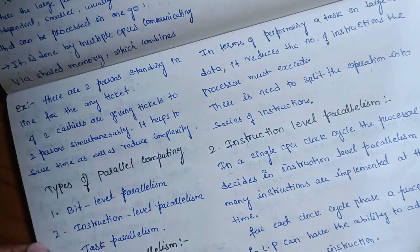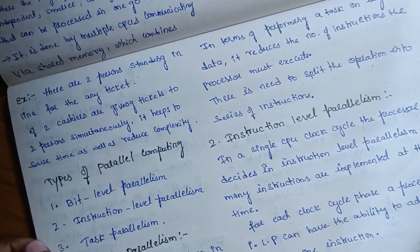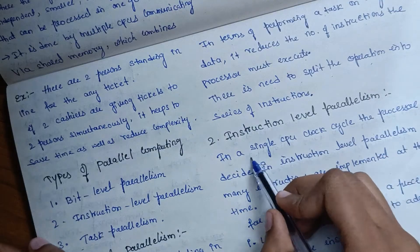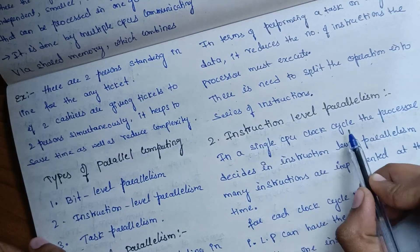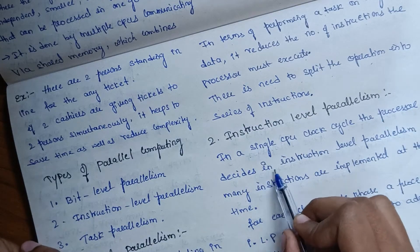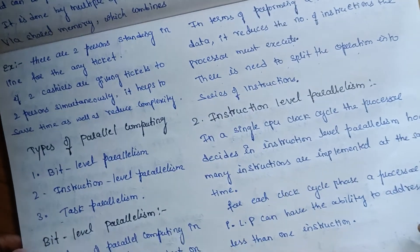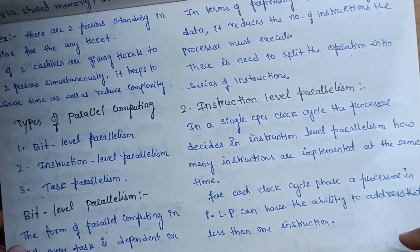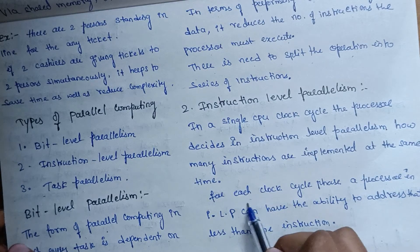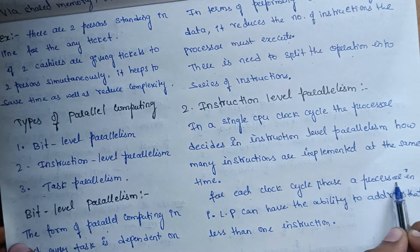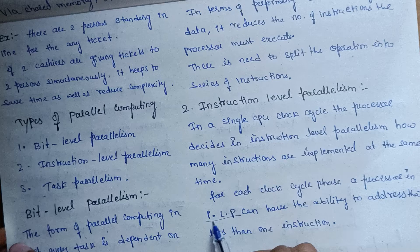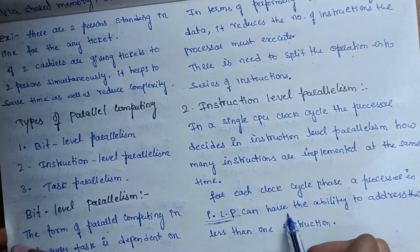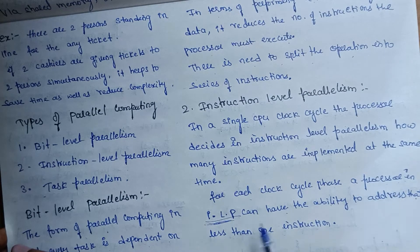In instruction-level parallelism, within a single CPU clock cycle, the processor decides how many instructions are implemented at the same time. For each clock cycle phase, a processor can have the ability to address less than one instruction per cycle.